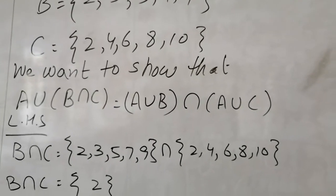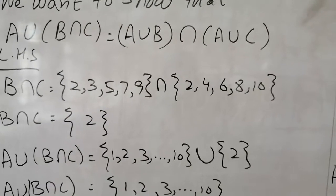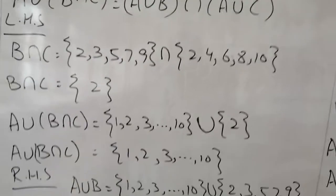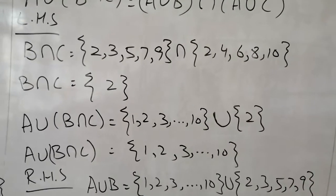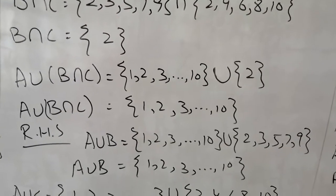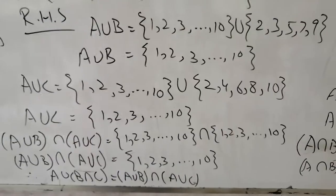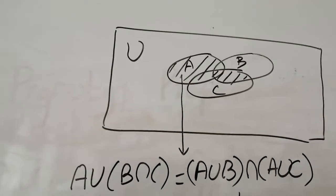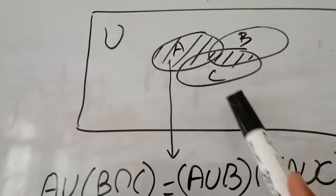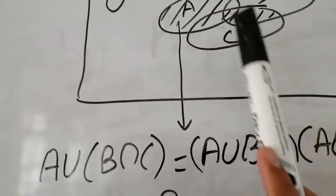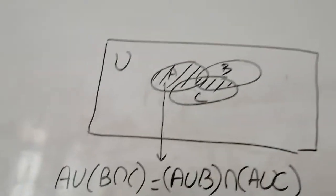Using the same three sets — A as first ten natural numbers, B as first five prime numbers, and C as first five even numbers — we show distributive property of union over intersection. On the left side, B intersection C gives 2, and then A union with that gives the first ten natural numbers. On the right side, A union B and A union C both give the first ten natural numbers, and their intersection also gives the first ten natural numbers. Both sides are equal.